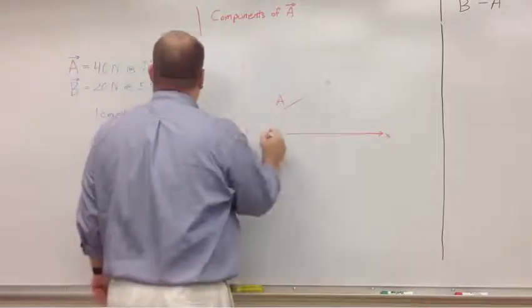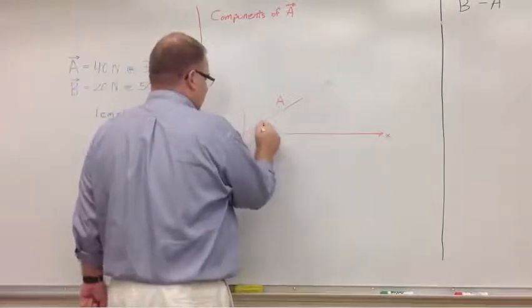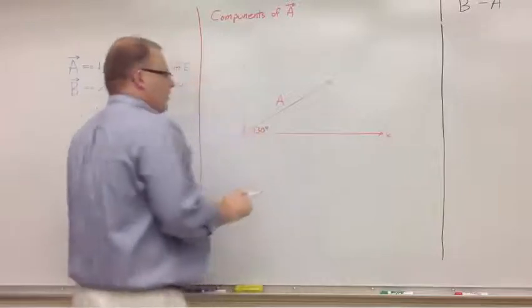Vector A, 30 degrees, not three, 30 degrees north of east.